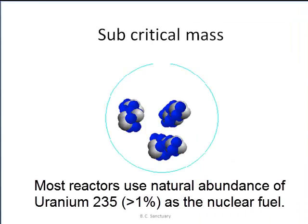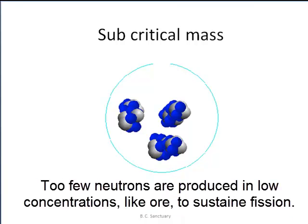Uranium ore is radioactive. In most reactors, the 1% abundance of the uranium-235 isotope is the material most commonly used. Since the concentration is not high in the ore, the number of uranium atoms that decay is not great. This is called subcritical mass.